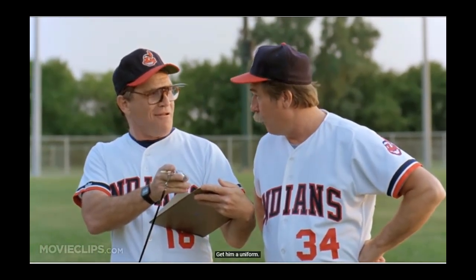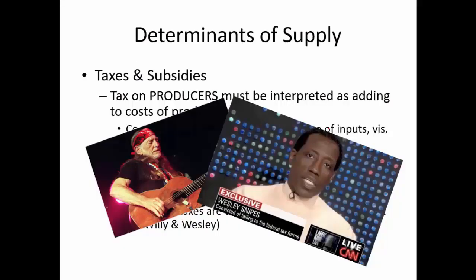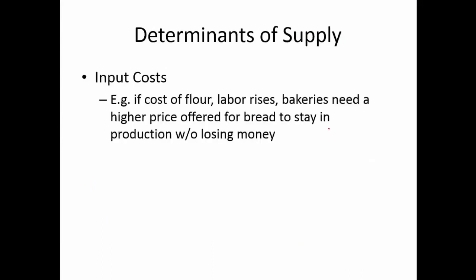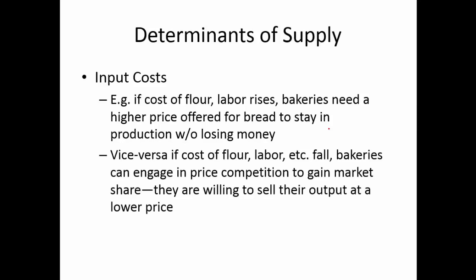You've got to pay those if you want to stay in production. So if the taxes go up, your costs go up and your supply curve will shift to the left. Now, input cost is an obvious one — if the cost of flour or the workers rises for the bread factory, the company needs a higher price on bread to stay in business without losing money to cover its costs.